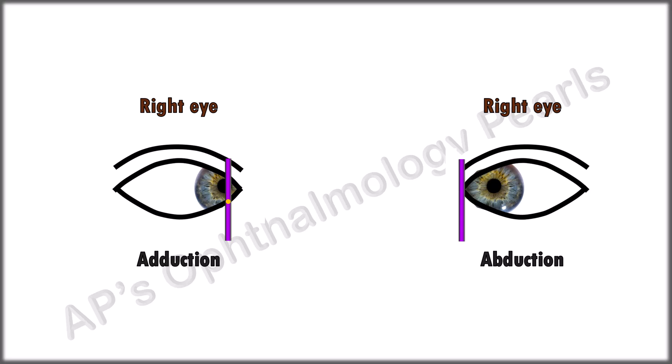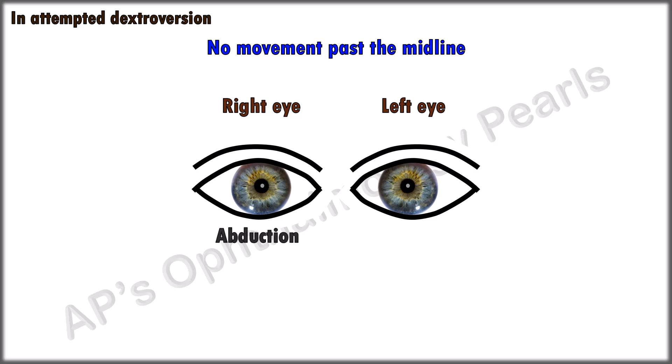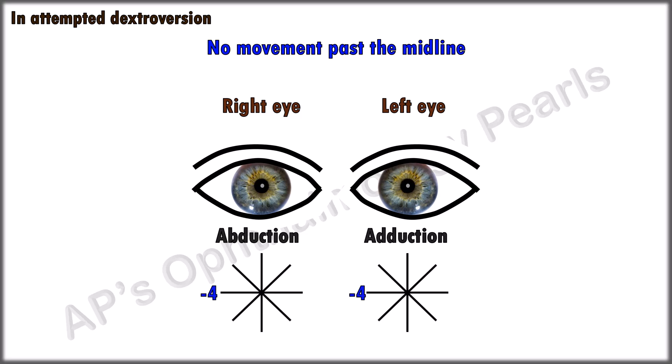Now let's look at what each of these gradings could look like. In attempted dextroversion, if there is no movement past the midline, the abduction in the right eye and the adduction in the left eye would be graded as minus 4.